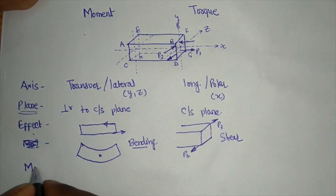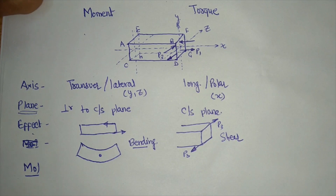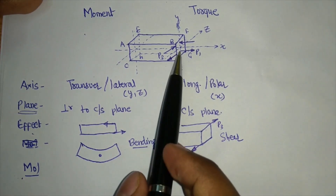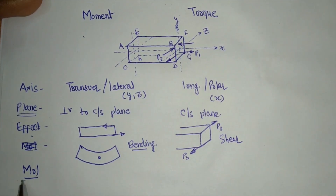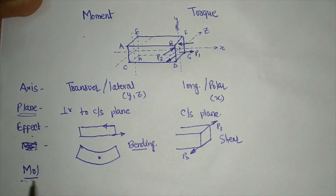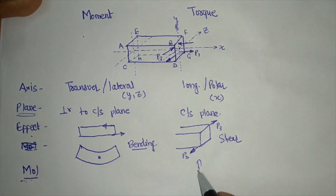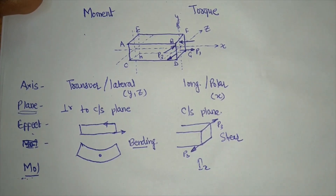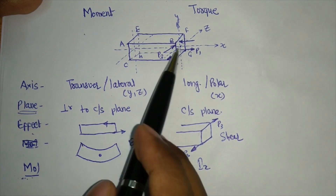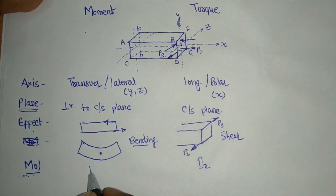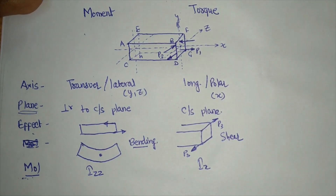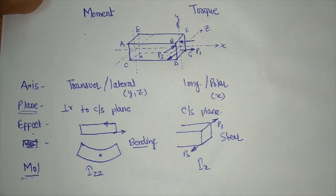We also consider moment of inertia. For torque, we take the moment of inertia along the same axis as the couple — the x-axis — which is the polar moment of inertia. In case of bending or moment, since bending is along the z-axis, we take IZZ. There is also a possibility that we need the moment along the y-axis, so let me explain that.